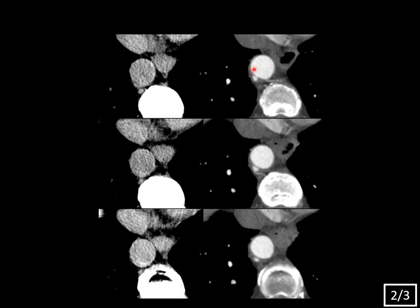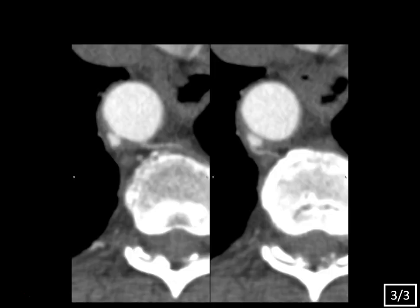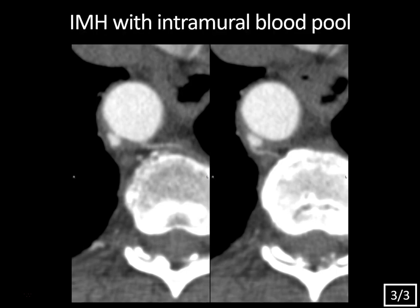As we scroll in, you see that there's this little pooling of contrast within the hematoma. So is this another ulcer-like projection? Well, if we look more closely and zoom in, you can see that it's actually not. It's something else known as an intramural hematoma with an intramural blood pool. How do you differentiate this from an ulcer-like projection, and why do you care? Well, these actually have no poor prognosis — this is just an incidental finding that often resolves over time. These tend to be a bit smaller, usually less than five millimeters in size. The key is they'll have this communication with a little branch vessel — almost like a type 2 endoleak — where this little artery is feeding the intramural blood pool, something you will not see with an ulcer-like projection.